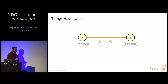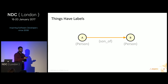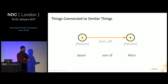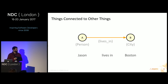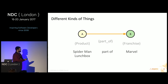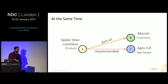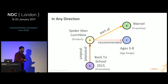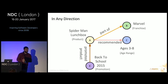Both vertices and edges tend to have labels. For example, two vertices with the label 'person' connected by an edge labeled 'son of.' They can connect similar things — Jason is the son of Alice — or different things, like a person who lives in a city. They can connect multiple different things simultaneously: a Spider-Man lunchbox is part of the Marvel franchise and is recommended for age groups three to eight. Edges also tend to have directions — directed graphs are what most graph databases are built upon.